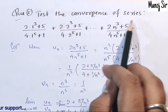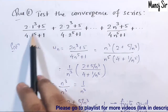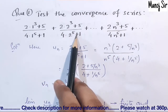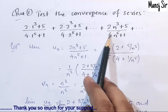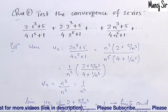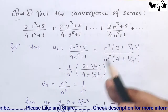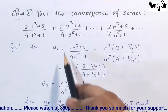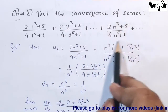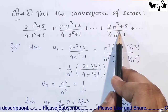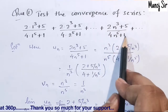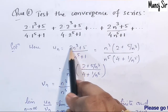Now let us solve a problem. Test the convergence of the series: 2(1)^3 + 5 / (4(1)^5 + 1) + 2(2)^3 + 5 / (4(2)^5 + 1) + ... The nth term is 2n^3 + 5 upon 4n^5 + 1. This nth term is our u_n. For u_n we always take the nth term of the series.